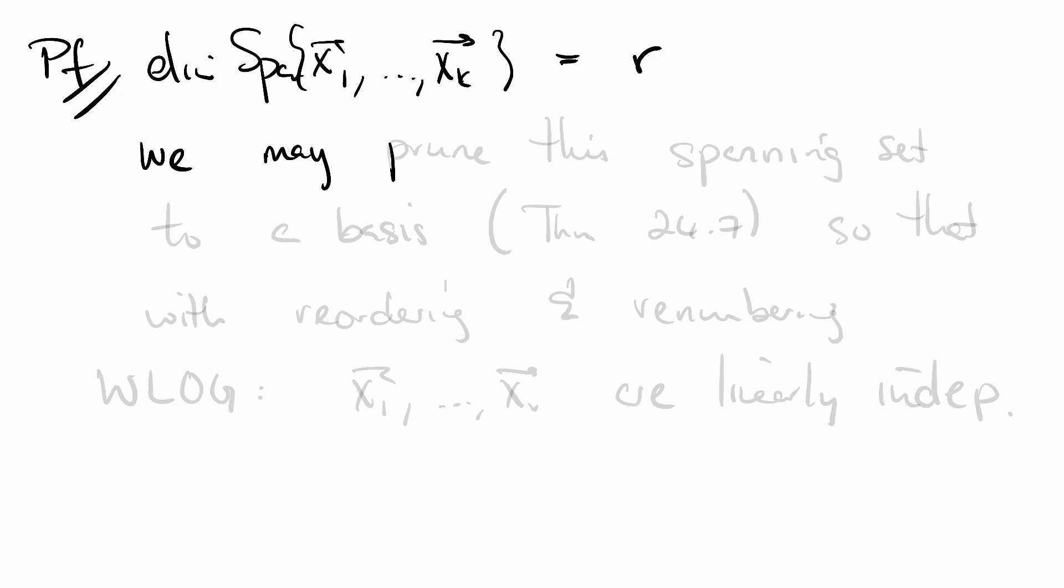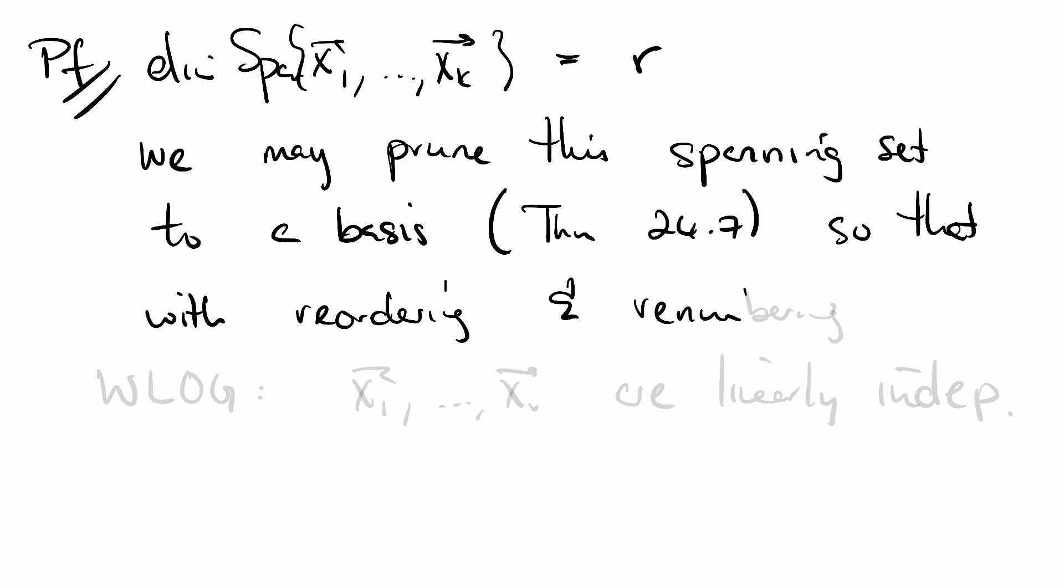We may prune this spanning set to a basis. So we can throw out vectors until we have r left, and these r will be linearly independent. This is by Theorem 24.7. So without loss of generality, we can say that x₁ through xᵣ are linearly independent.